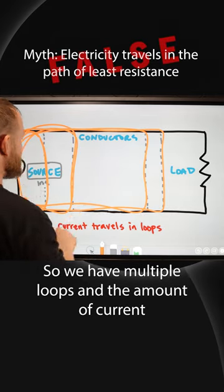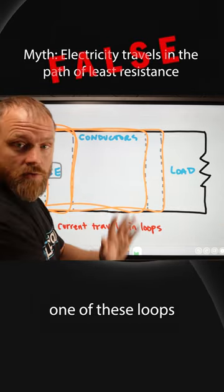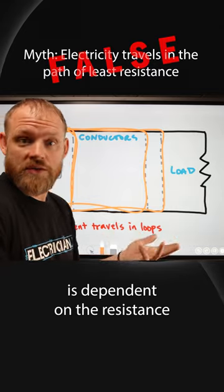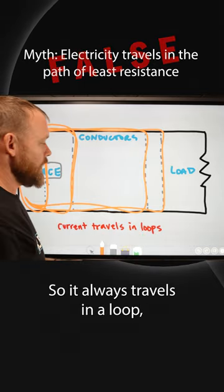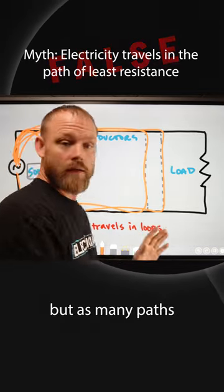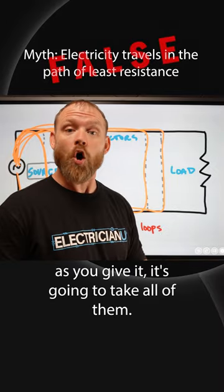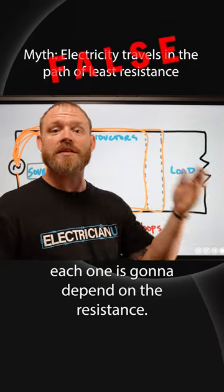So we have multiple loops and the amount of current that flows through each one of these loops is dependent on the resistance or the impedance of that load. So it always travels in a loop, but as many paths as you give it, it's going to take all of them. And the amount of current flowing through each one is going to depend on the resistance.